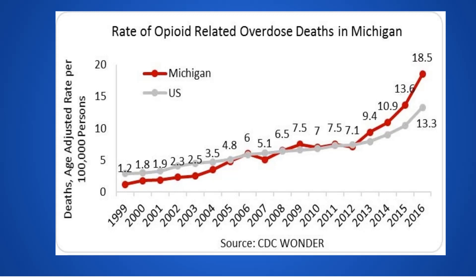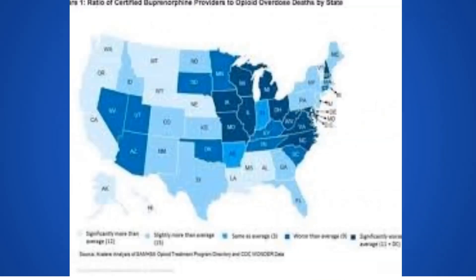This graph shows the Michigan-specific problem. Around 2000, opioid deaths started increasing nationally, and in Michigan, around 2012 they started rising even higher than the national average — data from the CDC. A map shows the ratio of buprenorphine provision to opioid deaths by state. Michigan is in dark blue, indicating the ratio is unfavorable — there are more deaths relative to the number of providers offering buprenorphine.